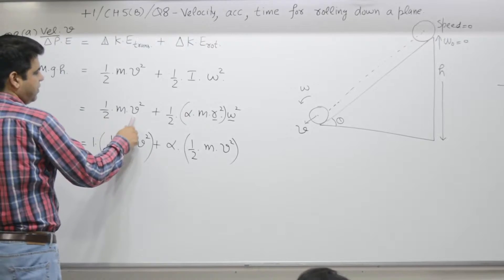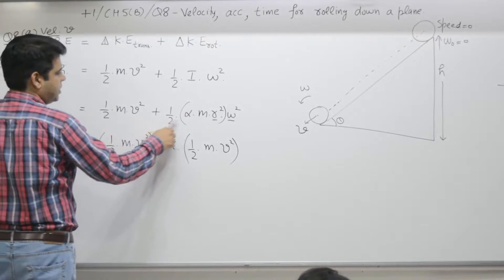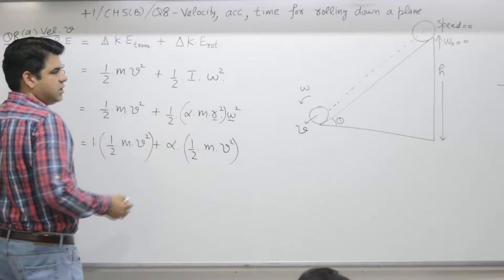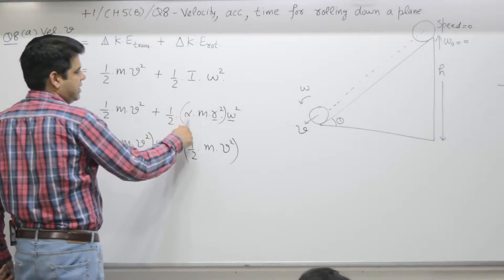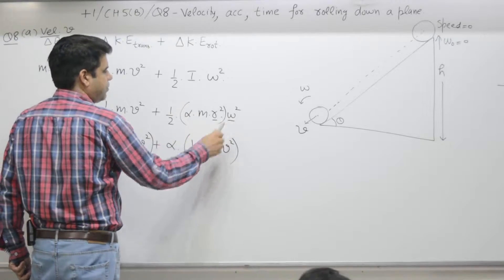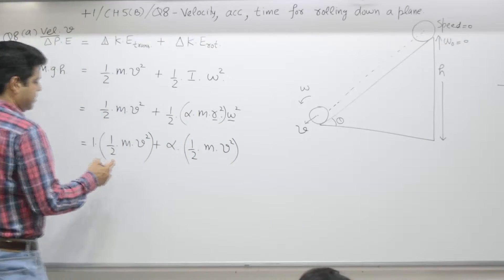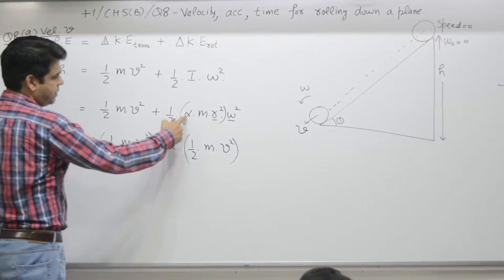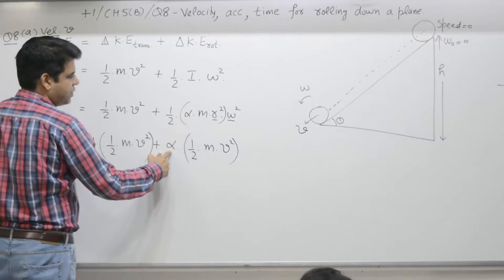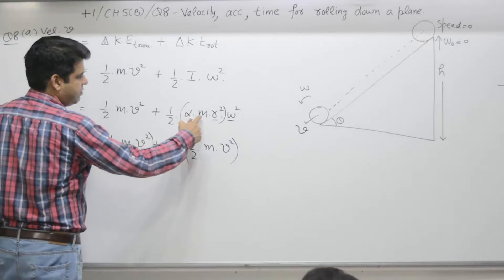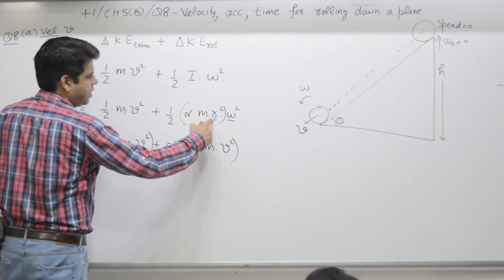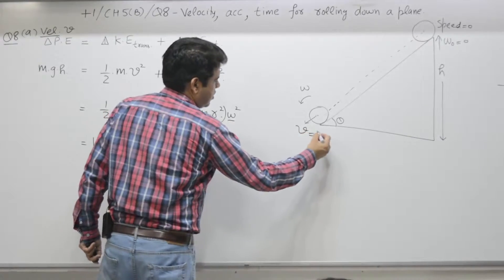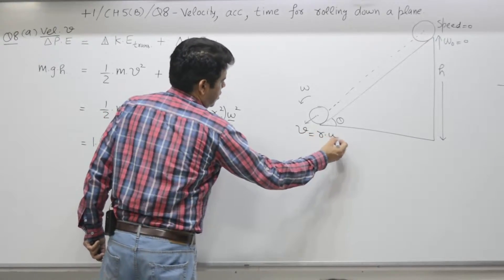So we have (1/2)mv² + (1/2)Iω². Now I is equal to α·m·r², and v = r·ω, so we can write (1/2)mv² + α·(1/2)mv².